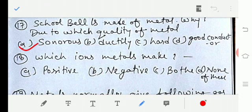Let's move to question number 18: Which ions do metals make? Option number A positive, option number B negative, option number C both, option number D none of these. So the answer is A, positive.